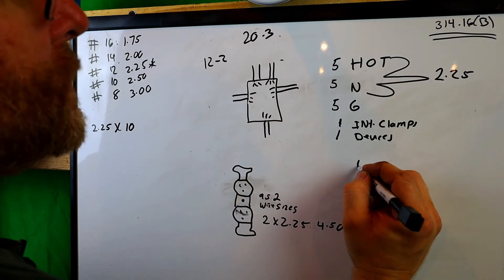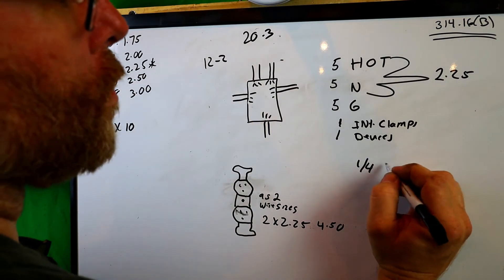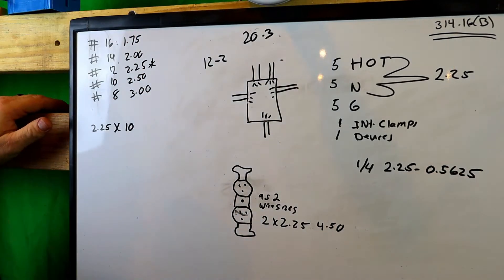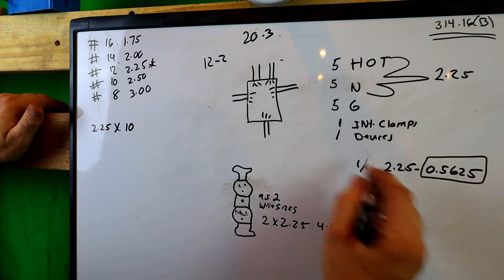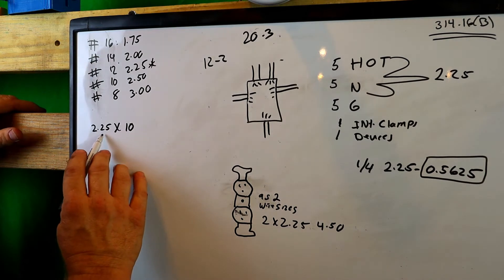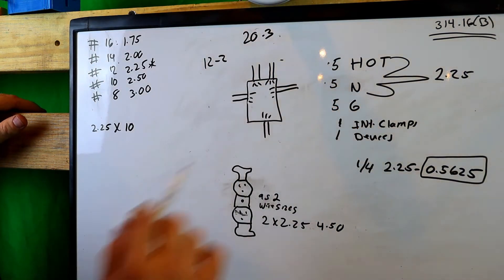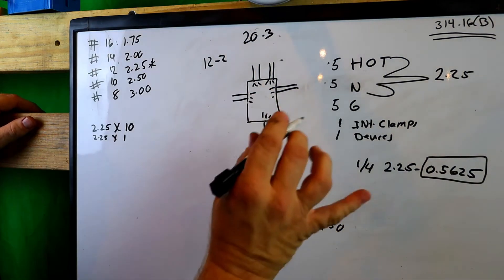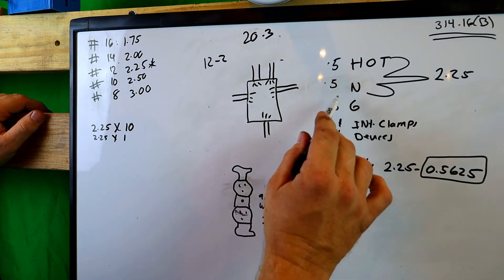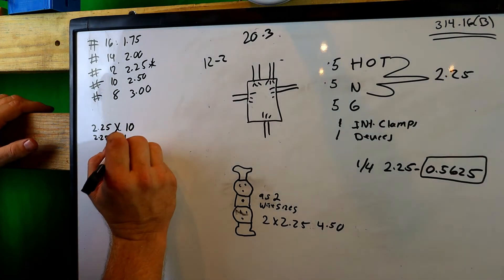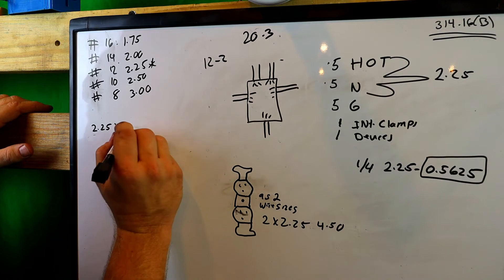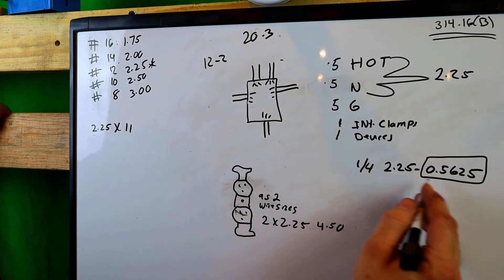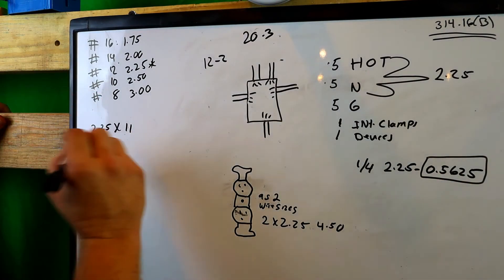This is what the fifth wire will be counted as. We have 2.25 times 10 - that's these two wires right here, the hots and neutrals. We also have to add one more 2.25 times one for our ground. Now I know this is going to be confusing but you gotta listen to me. You have five grounds - four of them are going to be treated as one size wire, so we'll put this as right here. Now we're at 11 times 2.25 - there's 10 hots and neutrals, and four grounds at 2.25. The other one will be treated as 0.5625.